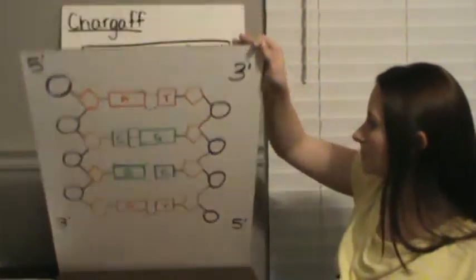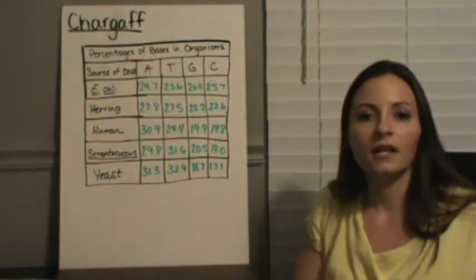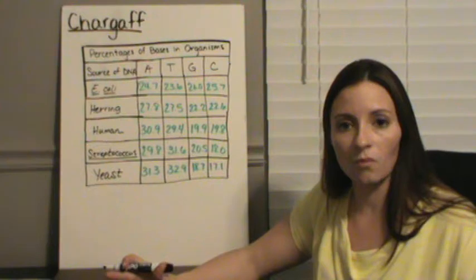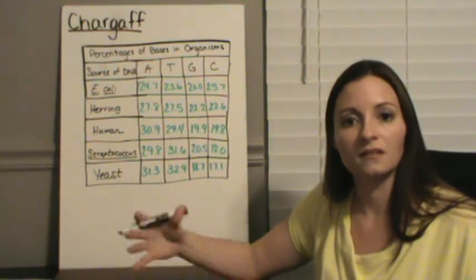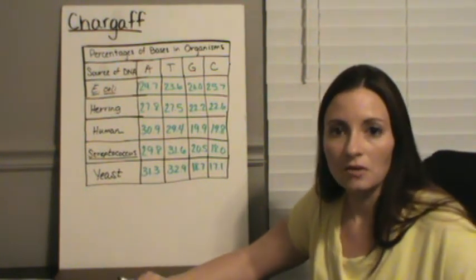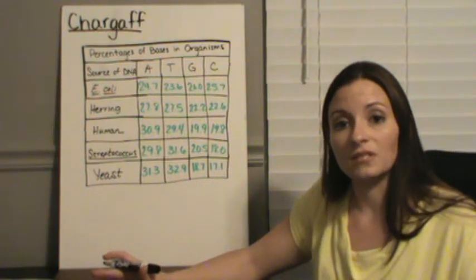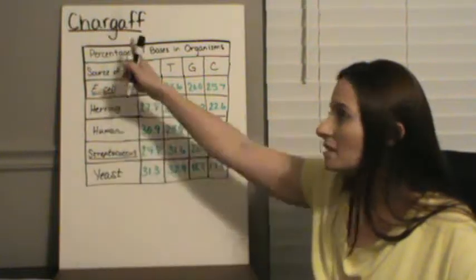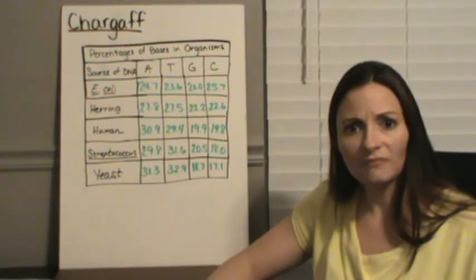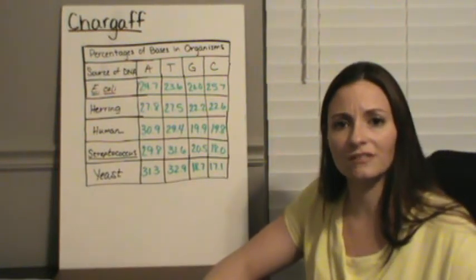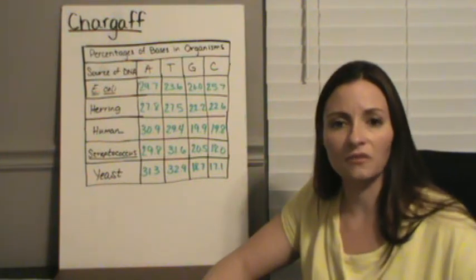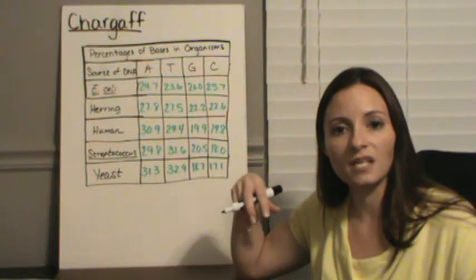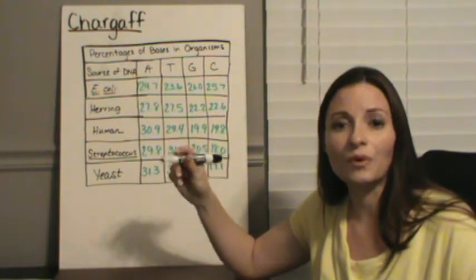Now, base pairing, we didn't always know that DNA was a base pairing structure. They had no idea how it was put together, in fact, for the longest time. One scientist named Chargaff did some research and he took the DNA in all kinds of different organisms. There's five of them here listed.